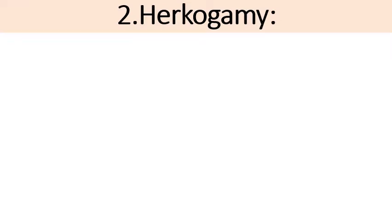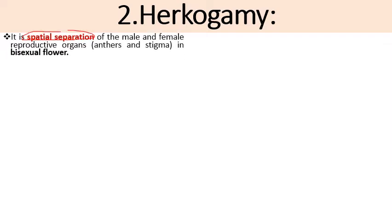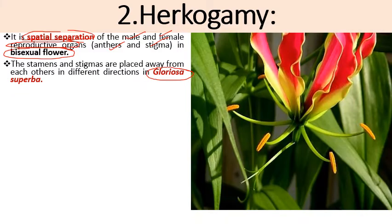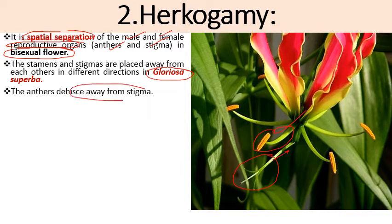The next adaptation is herkogamy. In this case there is spatial separation of male and female reproductive structures — that is, stamens and pistil are spatially separated in the same bisexual flower. For example, in the flower of Gloriosa superba the male and female reproductive organs are spatially separated, and the anthers dehisce away from the stigma, releasing pollen away from the stigmatic surface so there is no chance of self-pollination.